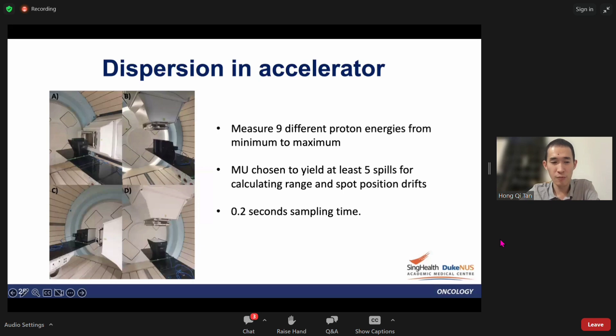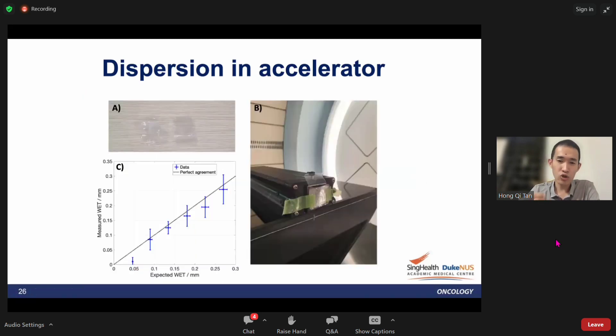To show that the Ranger is suitable for measuring range errors, we did simple measurements using plastic of about 50 microns. We showed that the Ranger is able to detect a range difference down to 0.1 millimeters, so it's certainly sensitive enough to measure the delta R.